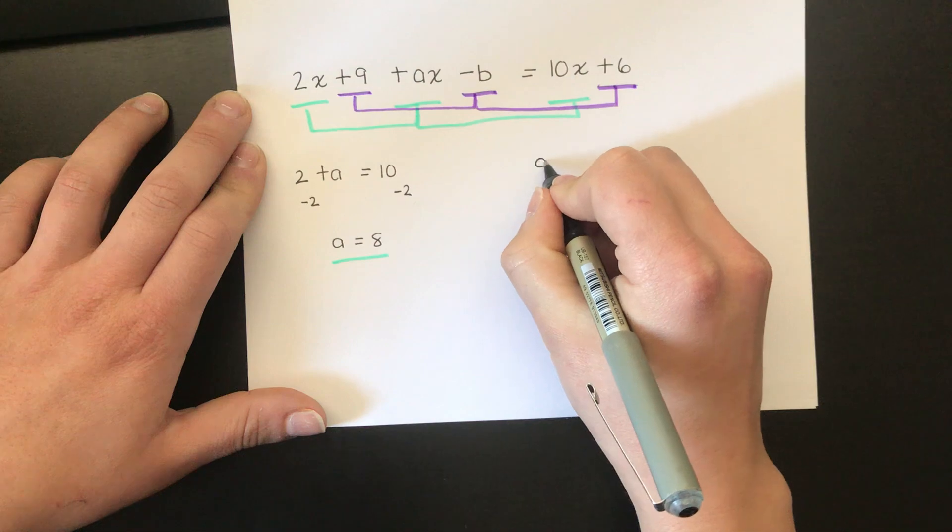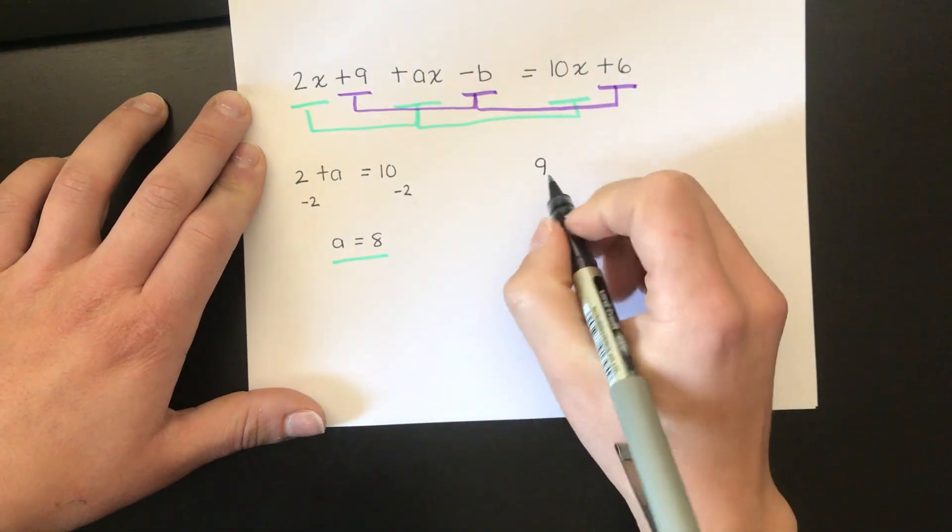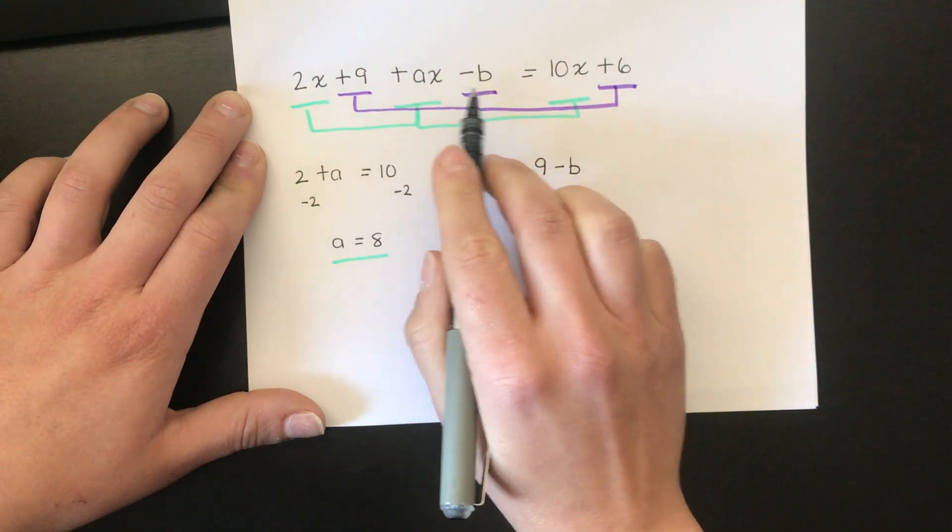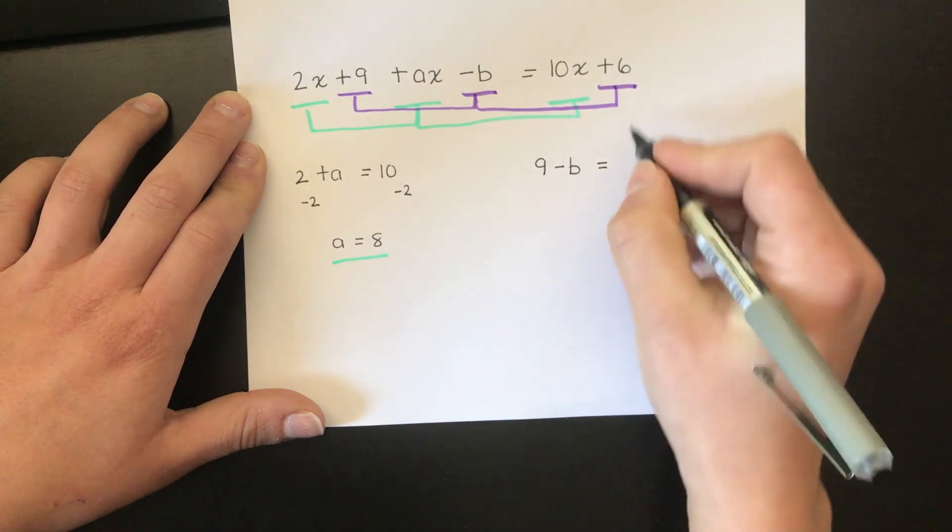So I can make another equation. 9 from this 9 right here, minus b, there's a negative b right there, equals 6.